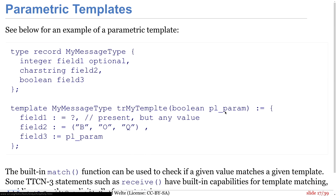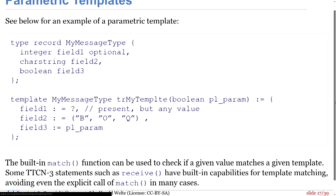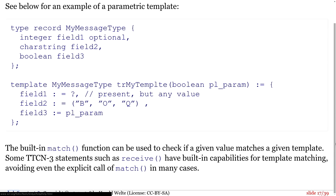Hier ein Beispiel eines parametrisierten Templates. Ich habe einen Nachrichtentyp mit Field 1 (optional), Field 2 und Field 3. Das Template hat einen Parameter, den man reingeben kann. Field 1 muss vorhanden sein, kann aber jeden Wert haben – also ist es optional nicht mehr, wenn dieses Template matchen soll. Field 2 hat wieder einbuchstabige zulässige Strings, und Field 3 ist der Template-Parameter. Man hat eine Match-Funktion, die einen Wert gegen ein Template vergleicht und Boolean zurückgibt.